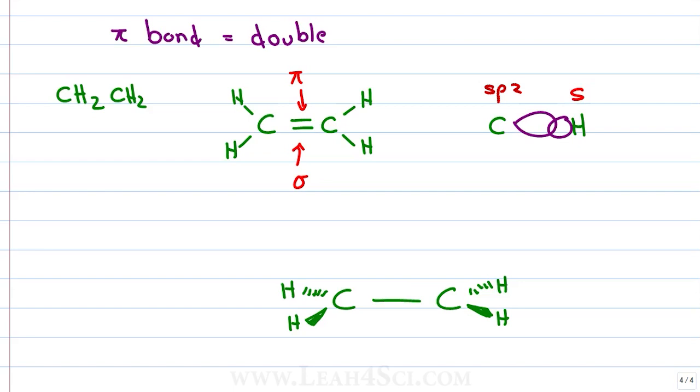The pi bond is made with a non-hybridized p orbital that individually sits just above and below the plane of the molecule, in our case the plane of the page. When those p orbitals come together and overlap, the pi bond is formed.